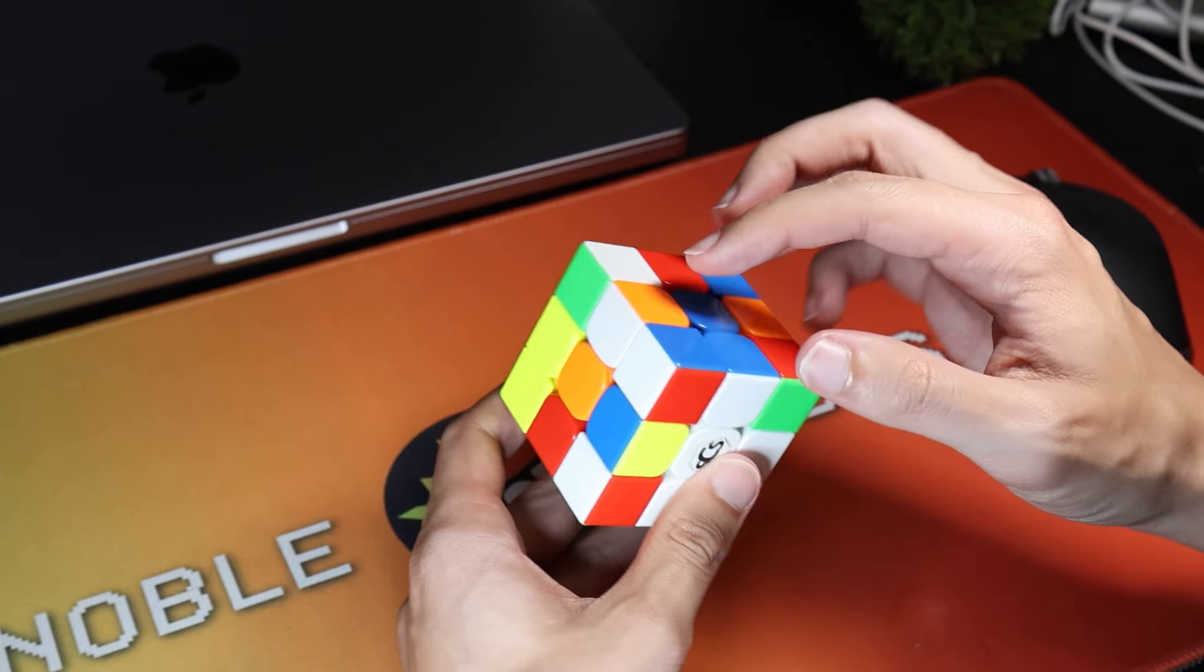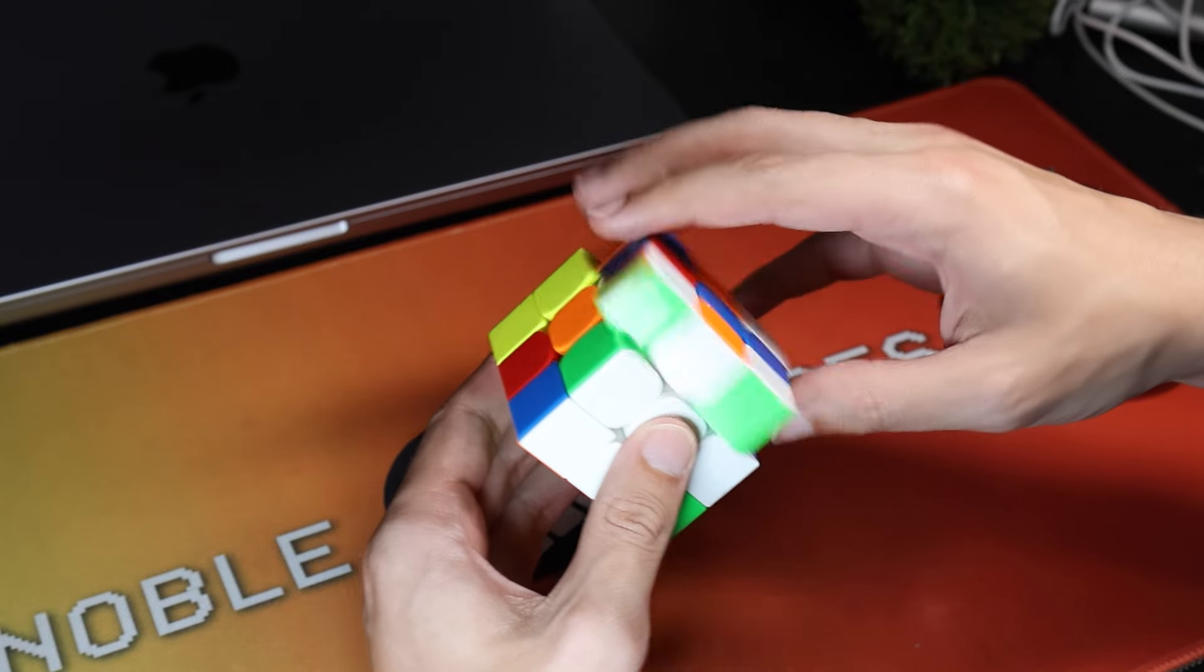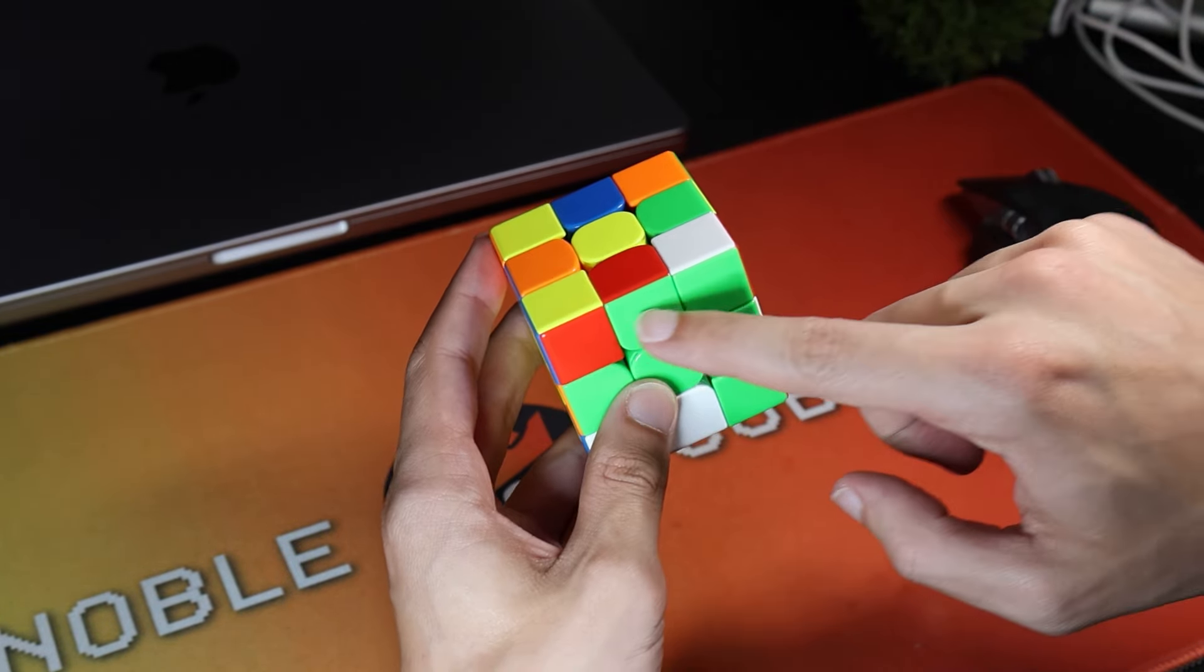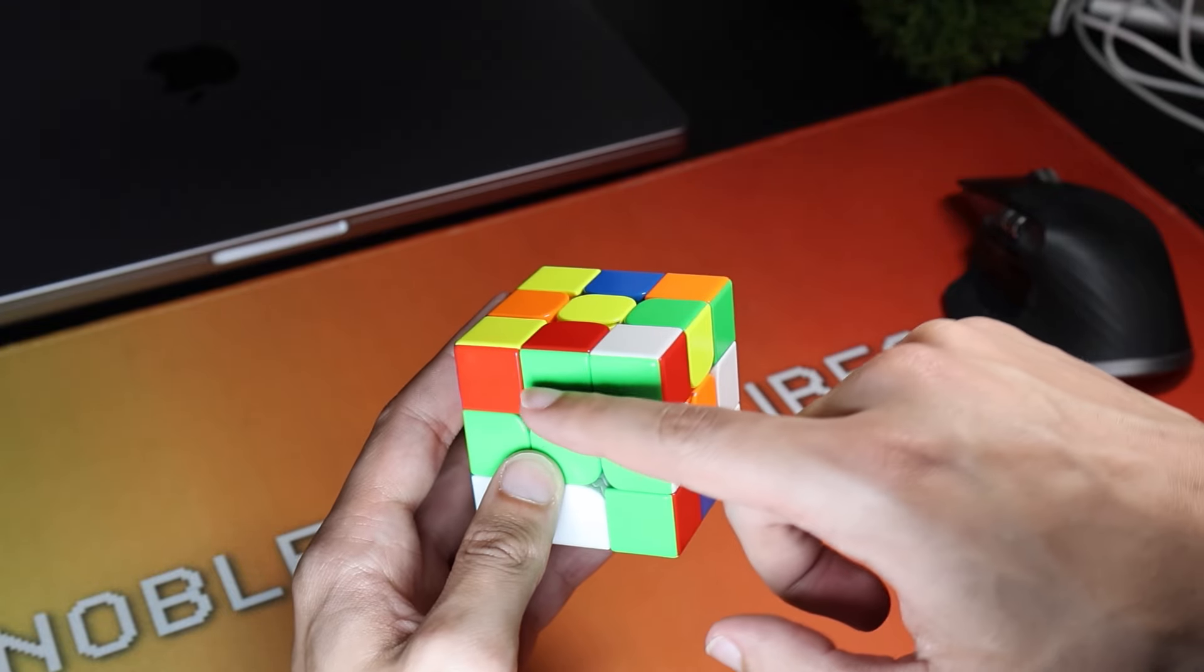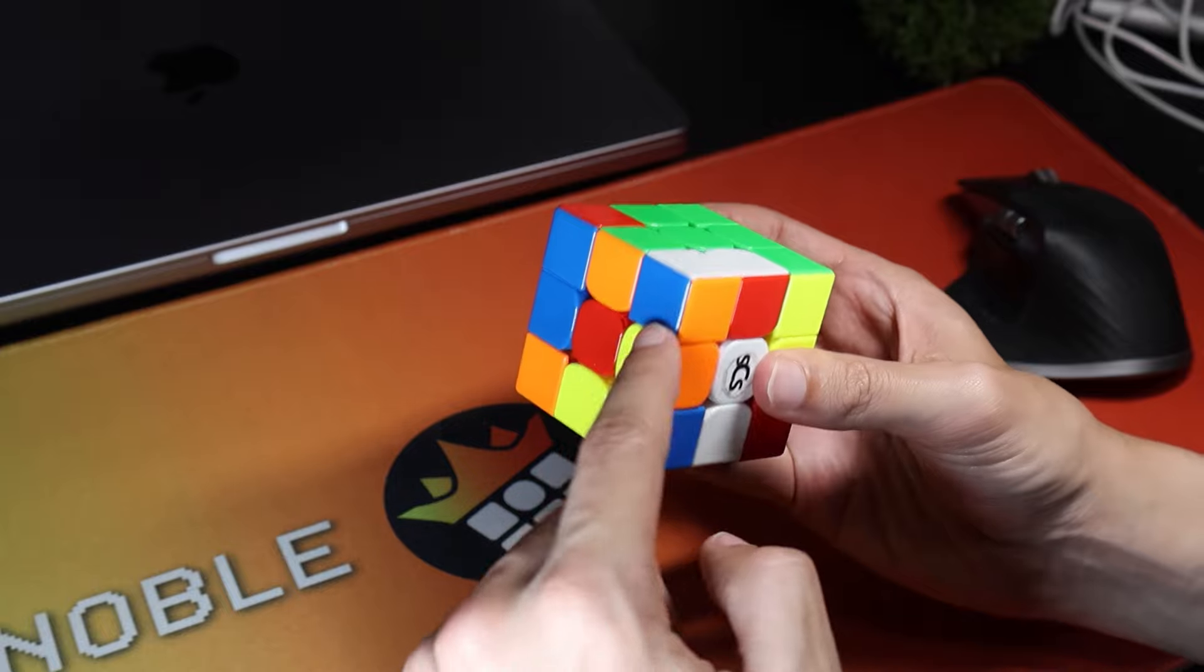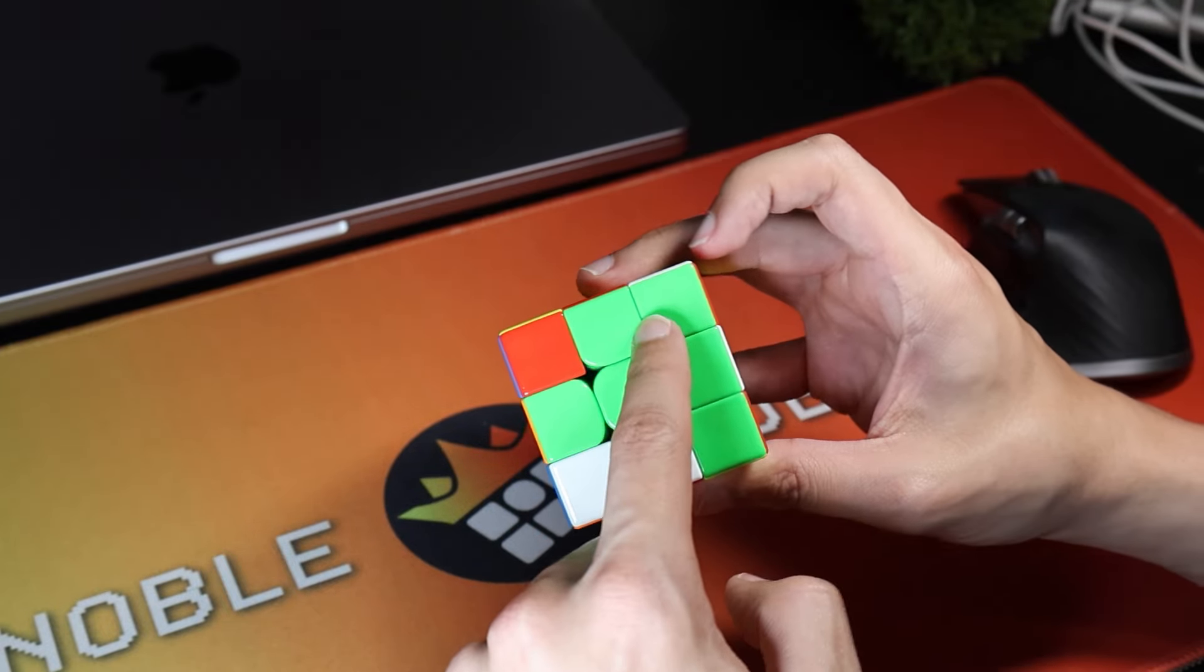And then what I could have done is I could have put this one in just something like that. But what I actually noticed instead is that there was this sort of really weird bad pair made here with this corner and this edge with the green and red, that as soon as I put these two edges in I could put that straight in.